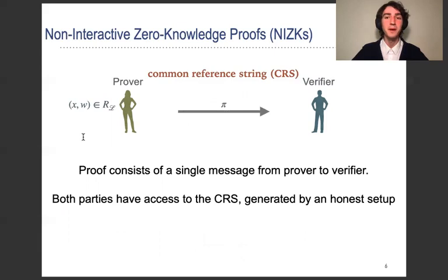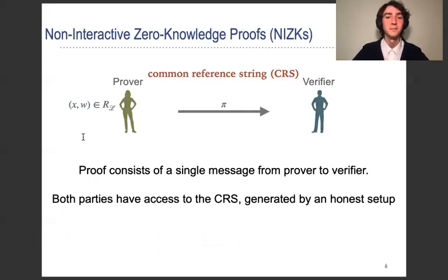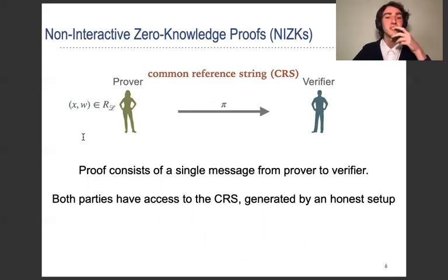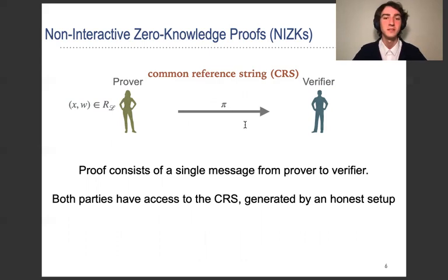In this paper, we care about non-interactive zero-knowledge, so NIZKs. In this context, there is a common reference string which is given to the prover and the verifier, and the entire interaction consists of one message sent from the prover to the verifier, which we call the proof.